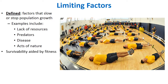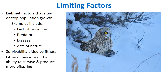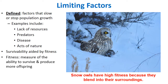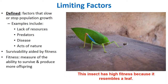The ability to survive is aided by fitness. Fitness means the ability to survive and produce offspring — not physical exercise. For example, this owl has high fitness because it blends into its snowy environment, allowing it to survive and reproduce. Similarly, the katydid insect looks like a leaf, blending into its environment, making it more likely to survive and reproduce — it also has high fitness.